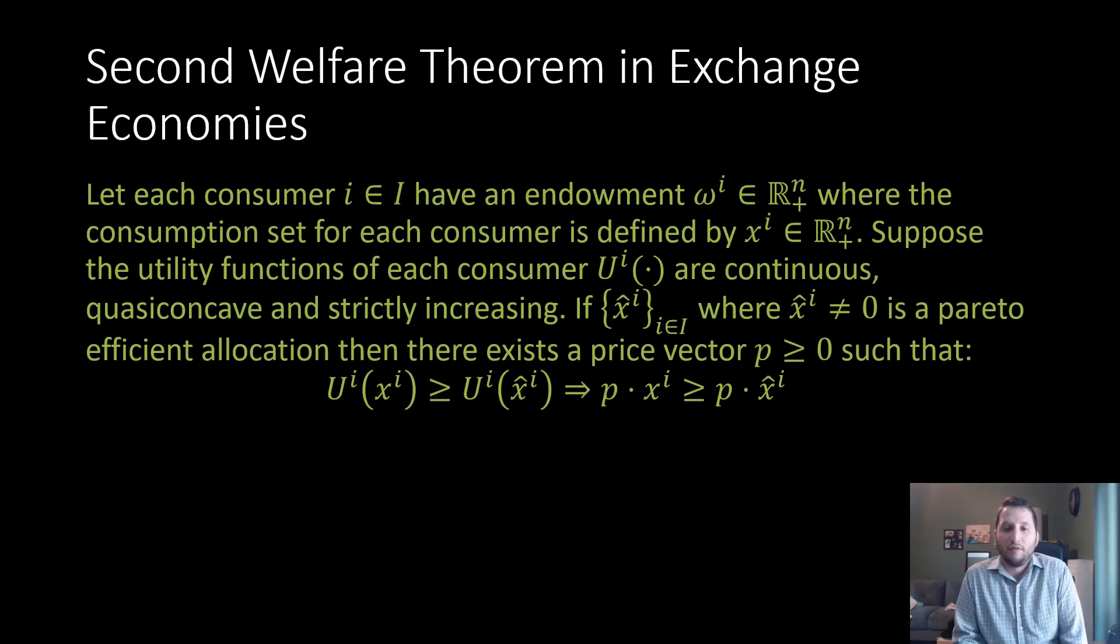So this is a second welfare theorem for exchange economies. Let each consumer i in our set of total consumers I have an endowment ω^i in R^n_+, where the consumption set for each consumer is defined by x^i in R^n. Suppose the utility functions for each consumer U^i are continuous, quasi-concave, and strictly increasing.